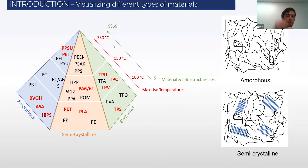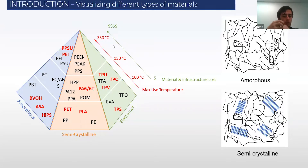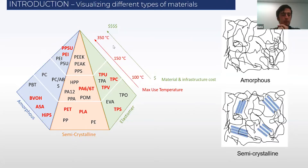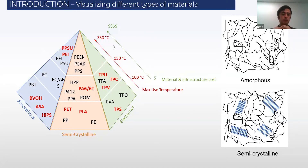As you go up that pyramid, you can start doing applications that are more advanced, such as nylon 6 or nylon 12. Those materials are more tough and more applicable to different types of solutions. And then finally on the top, we have the high-temperature materials, which we referenced before as PPSU, PEI, and your PEEK materials.